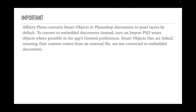Important — particularly with the Windows PC version of Affinity Photo. It converts smart objects in Photoshop documents to pixel layers by default. To convert to embedded documents instead — which is Affinity Photo's equivalent of smart objects — turn on 'Import PSD smart objects where possible' in the app's general preferences. Smart objects that are linked, meaning their content comes from an external file, are not converted to embedded documents. Just about every mockup PSD from this site is embedded, so there's no problem. Remember: before you even start, go to preferences and turn on 'Import PSD smart objects where possible.'